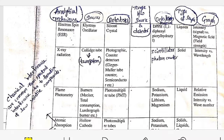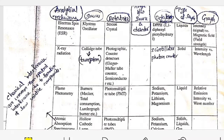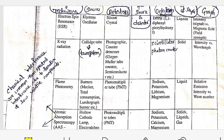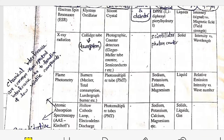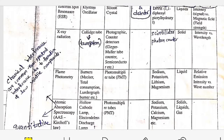Electron spin resonance uses crystal oscillator as source, and the detectors are silicon crystals. Angle is not important, and detecting material is DPPH. Type of sample is only liquids, and the graph is intensity versus magnetic field.